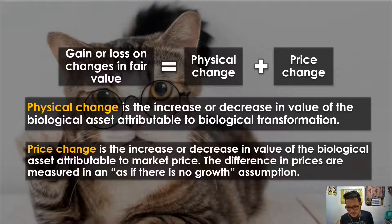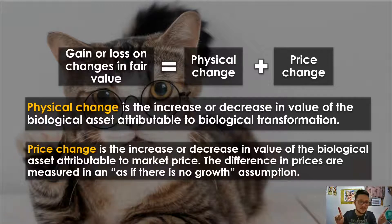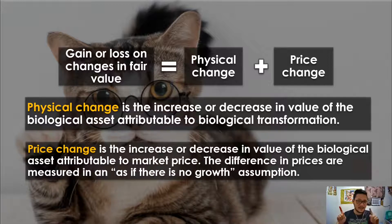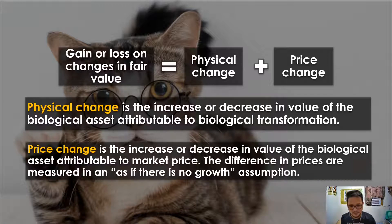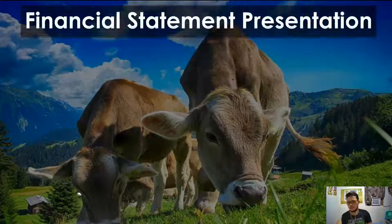For price change, we assume there is no growth. For example, the price of a piglet at the beginning of the year is 2,000 pesos and at the end of the year it becomes 2,500 pesos. If you were investing in a piglet, when would be the wise time to buy — beginning or end of year? With no growth assumed, you save more by buying at the beginning. So if you bought a piglet at the beginning of the year and by December 31 you can sell it at 2,500 — that 500-peso difference is the change in fair value due to price change.